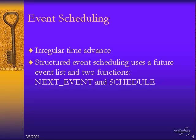There are a couple of different types of event scheduling, but structured event scheduling is the one that uses an event list or data structure. You can do event scheduling without data structures using simple variables, but for anything but the simplest systems you would run into trouble. When people talk about event scheduling, they typically mean event scheduling using specific data structures. There are two key functions — next event and schedule — which we'll go over when we draw on the whiteboard.